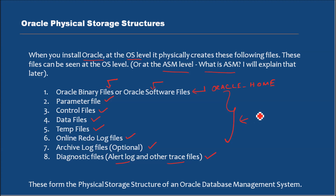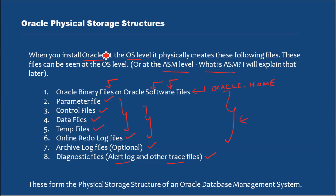I am trying to keep this as simple as possible. Depending on the option you select during installation, it may not create all these files. For example, if you just install Oracle software and do not create a database, it won't create these files — it will just install the software. So when I say 'install Oracle,' I mean installing new Oracle software with a database. The important thing to understand is that when you install an Oracle database, it creates binary files for Oracle, and then creates the parameter file, control files, data files, temp files, online redo log files, archive log files, and diagnostic files. These form the physical storage structure of an Oracle database management system.